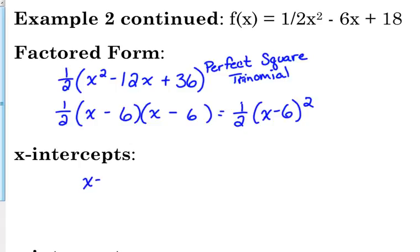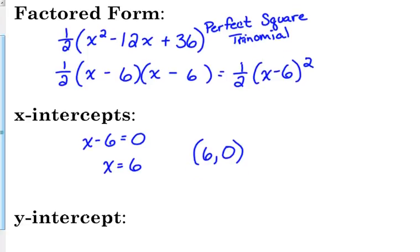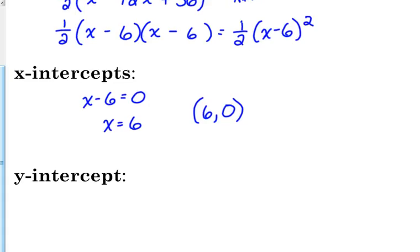So our x-intercepts, we set our factor equal to 0. Well really, we only have one factor. It's written twice, but really it's the same thing. So we're going to get the same answer, which is 6. So our x-intercept is the same as our vertex. That's possible. It's possible to only have one x-intercept. We had two last time. And if you'll recall, it's possible to have no x-intercepts as well with a quadratic. Our y-intercept is always the constant on the end, so our y-intercept would be 0, 18.